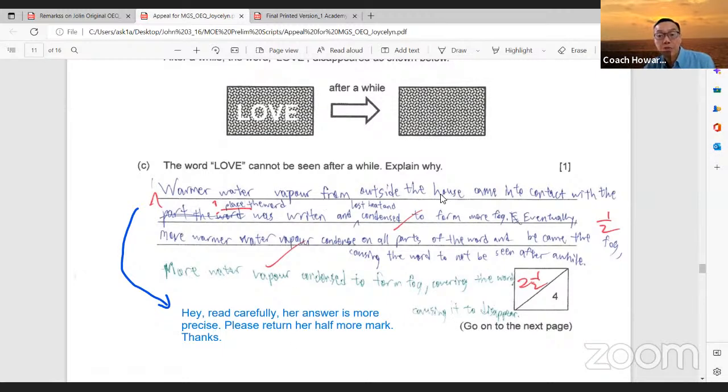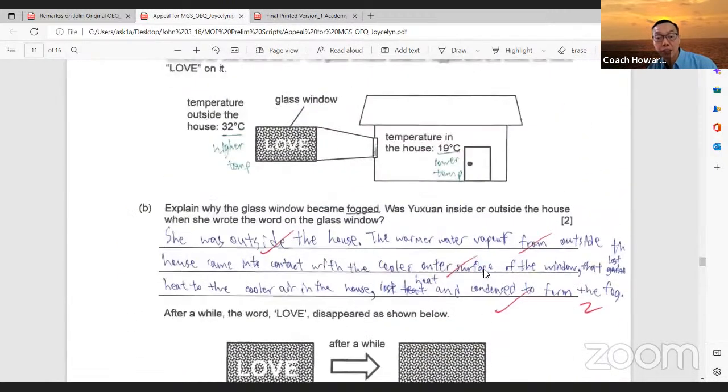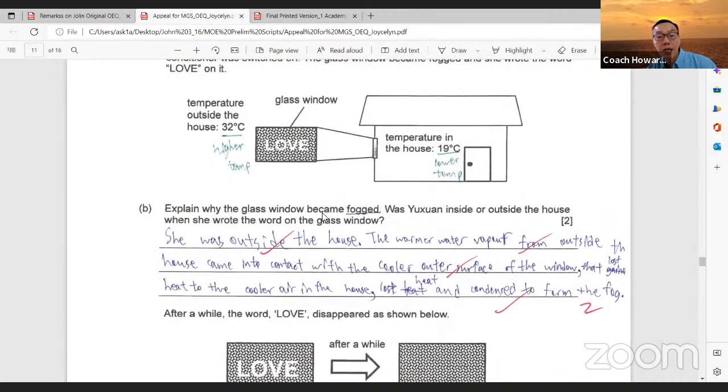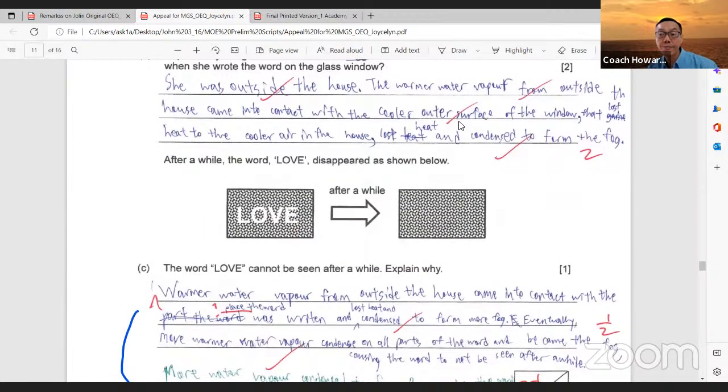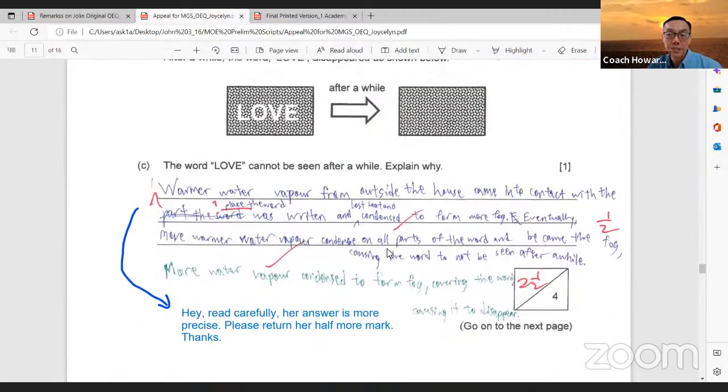She mentioned warmer water vapor from outside the house came into contact with the place the word was written. The warmer water vapor in the surrounding came into contact with this place and lost heat and condensed to form more fog. Eventually, more warmer water vapor condensed on all the words and became the fog, causing the word not to be seen after a while. In the context here, they use a word, explain why the glass window becomes fogged. Contextually, she's using the same syntax. She used the word fogged. I highly recommend this answer to be rewarded.